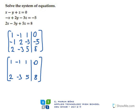It will be row one plus row two. So, one minus one gives zero; minus one plus two gives one; and one minus three gives minus two; and zero minus five gives minus five.